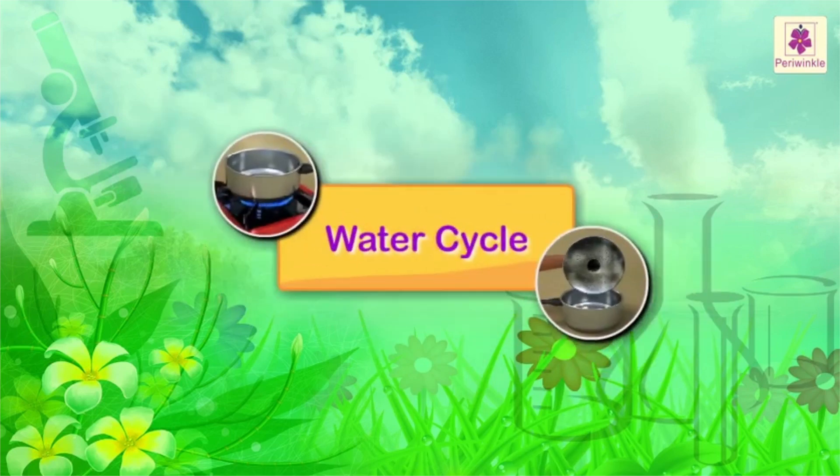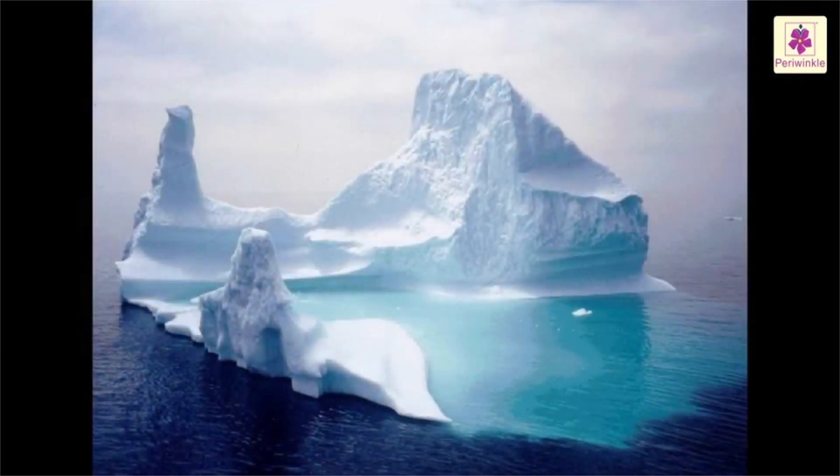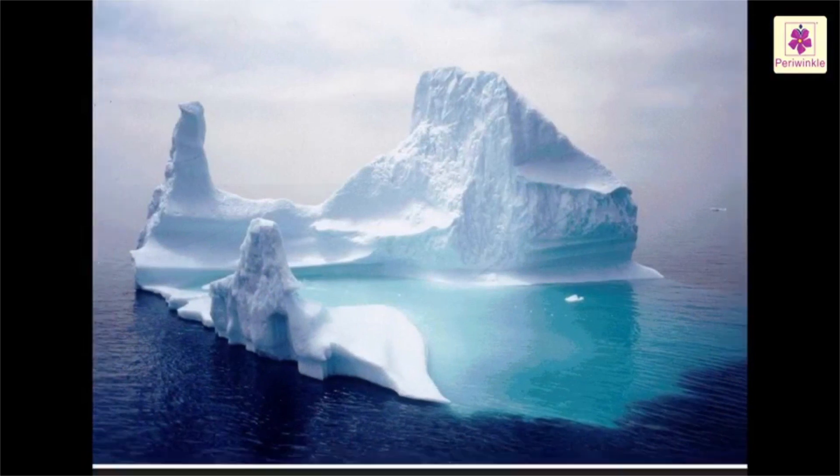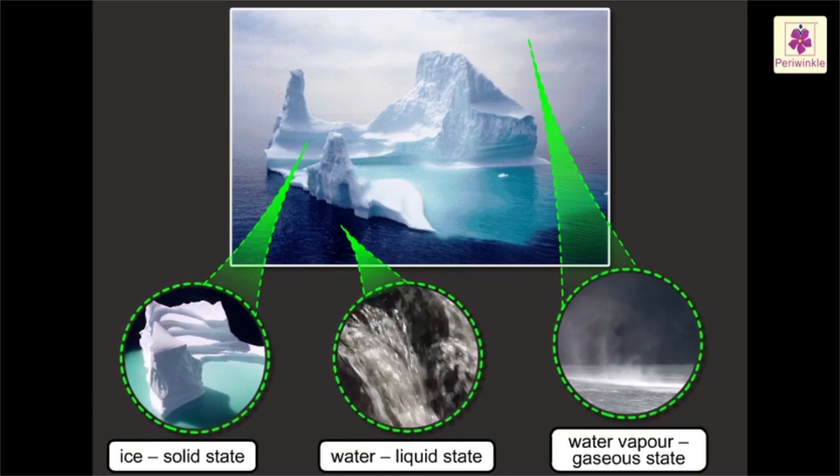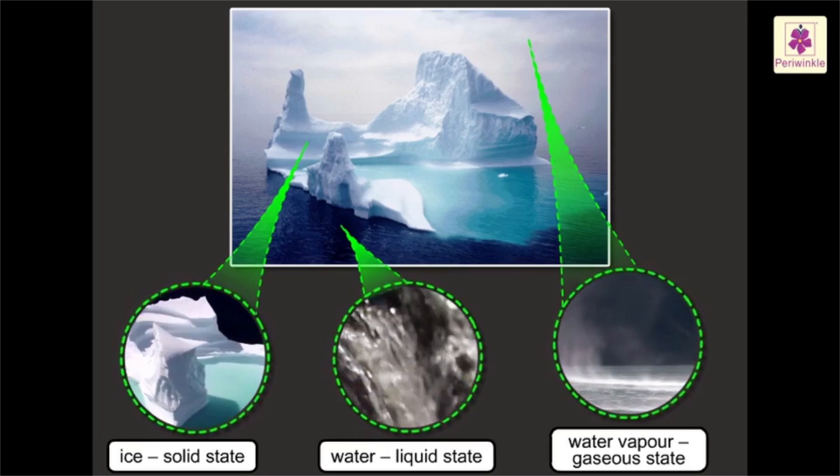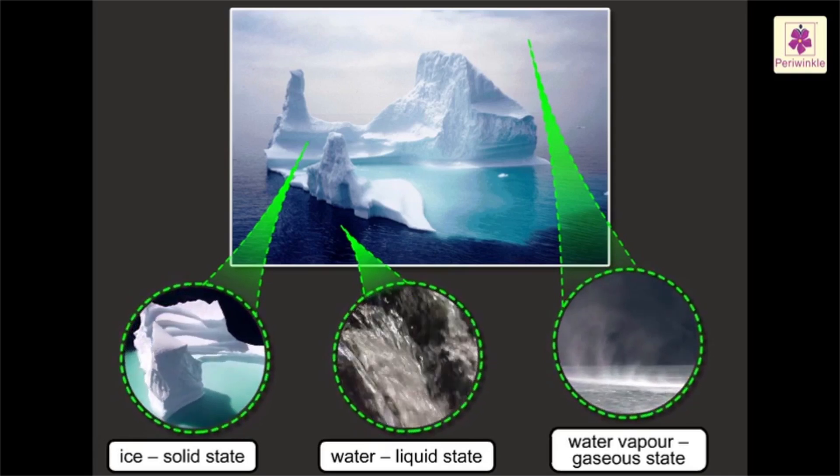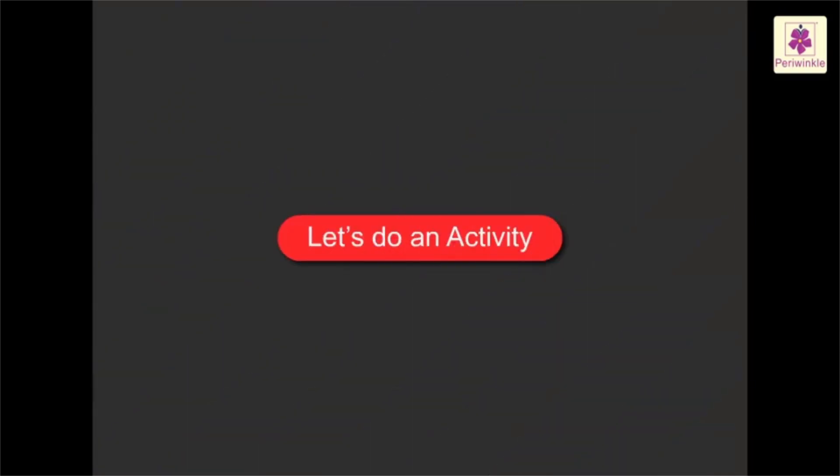Water cycle. Water is the only substance on earth that naturally occurs in three different forms: as ice in the solid state, as water in the liquid state, and as steam or water vapor in the gaseous state. Let us do an activity to understand it in a better way.